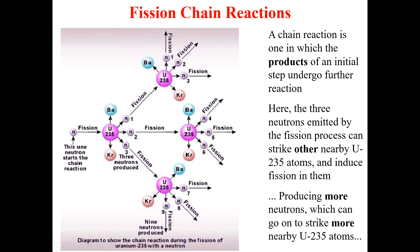They again cause further fission in uranium-235 atoms, just like you can see here. First we initiate the fission with a single neutron, and as a result of that single neutron we get three neutrons from the first fission. These three neutrons are then accelerated toward further uranium-235 nuclei, inducing more fissions.